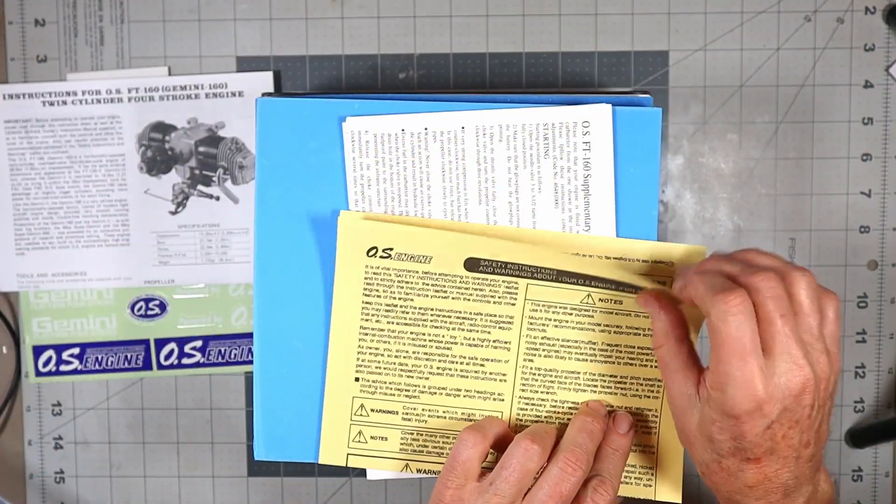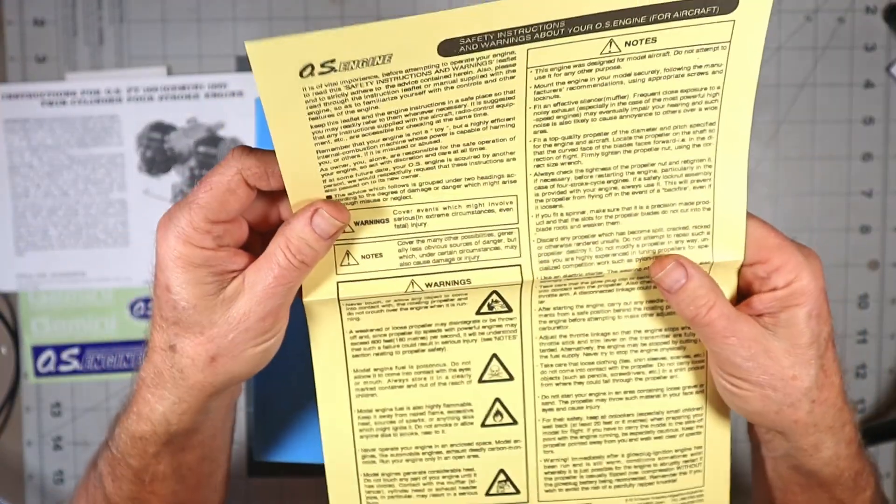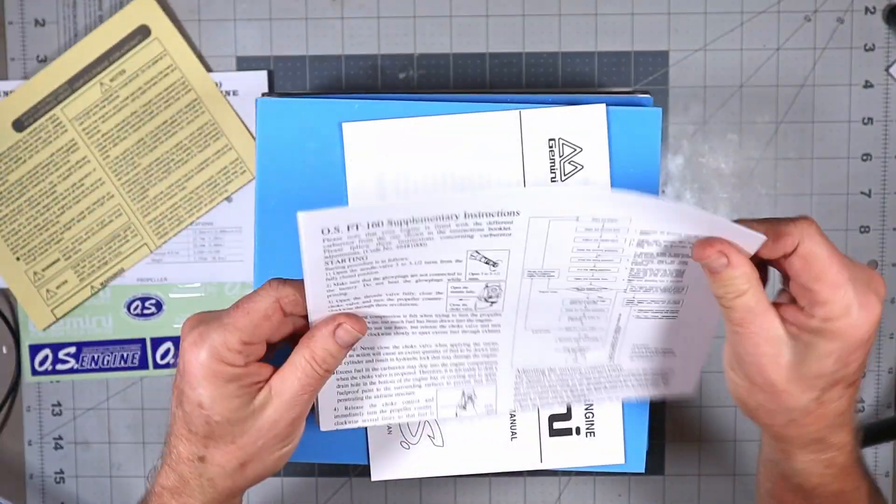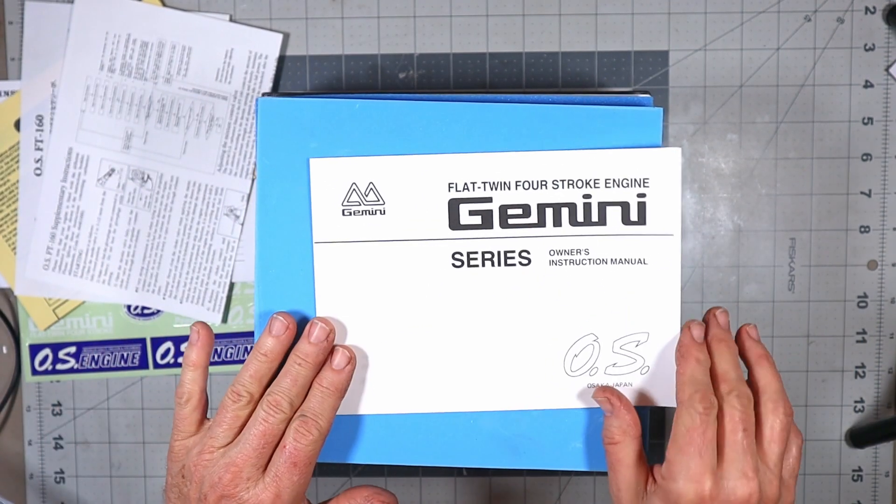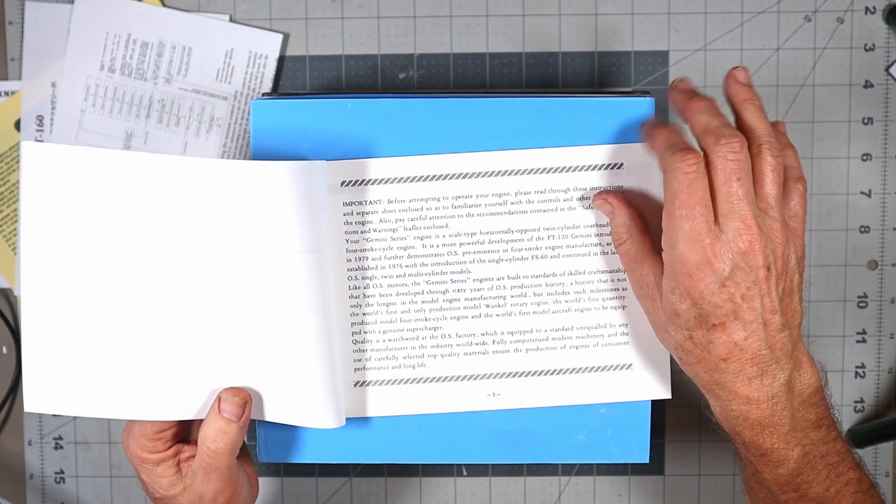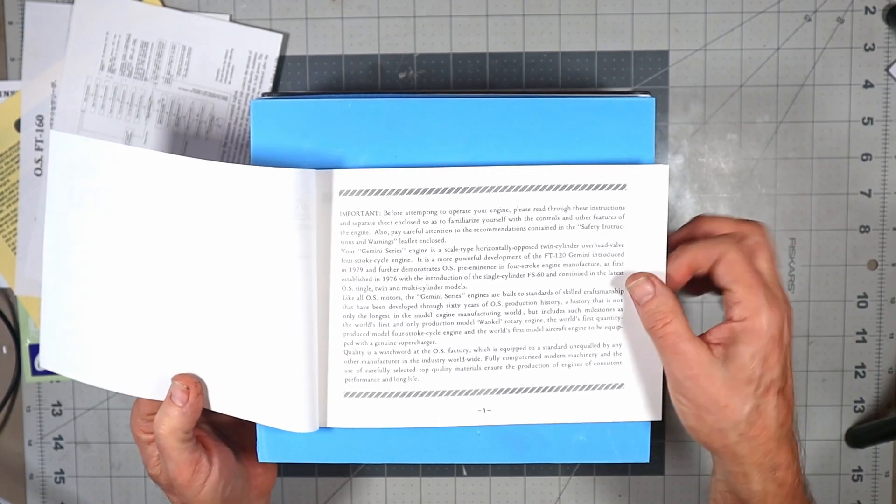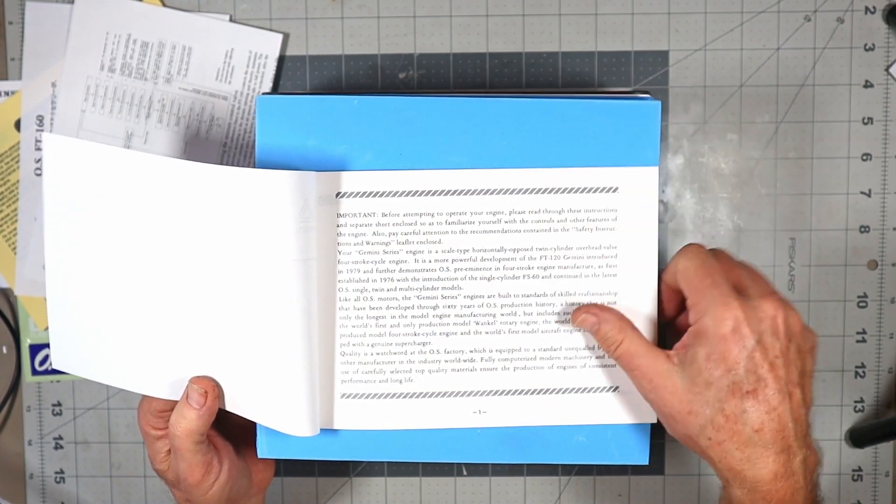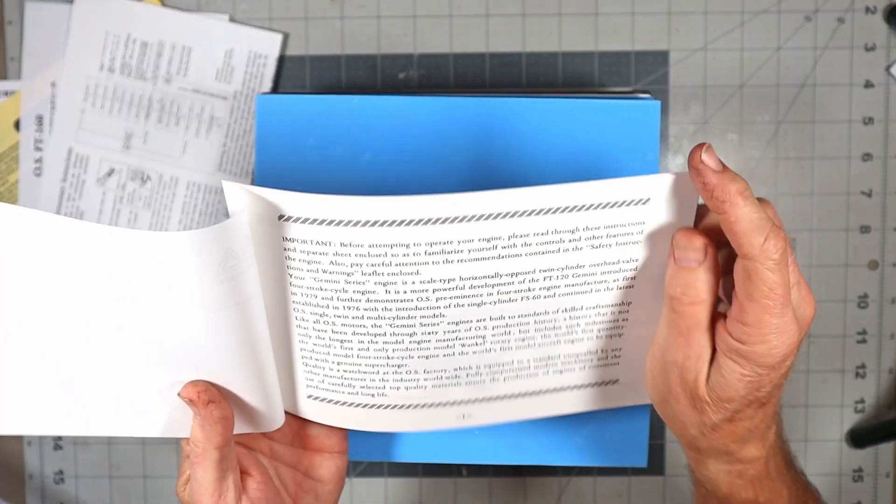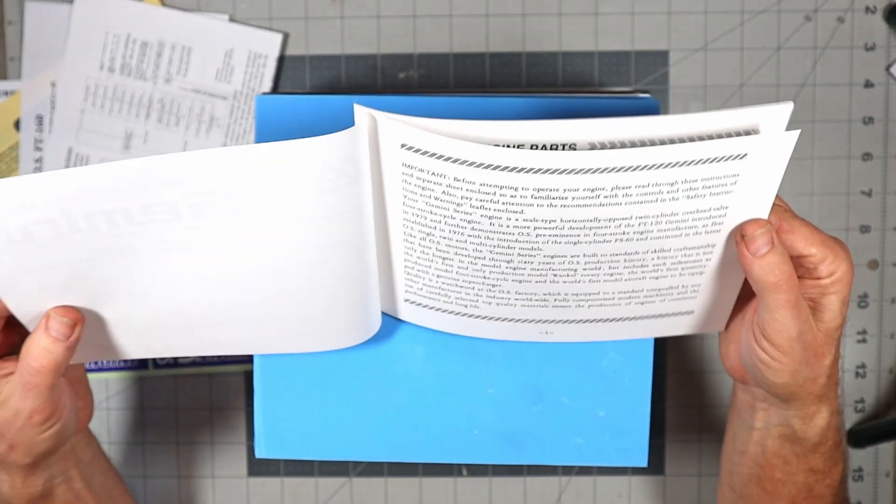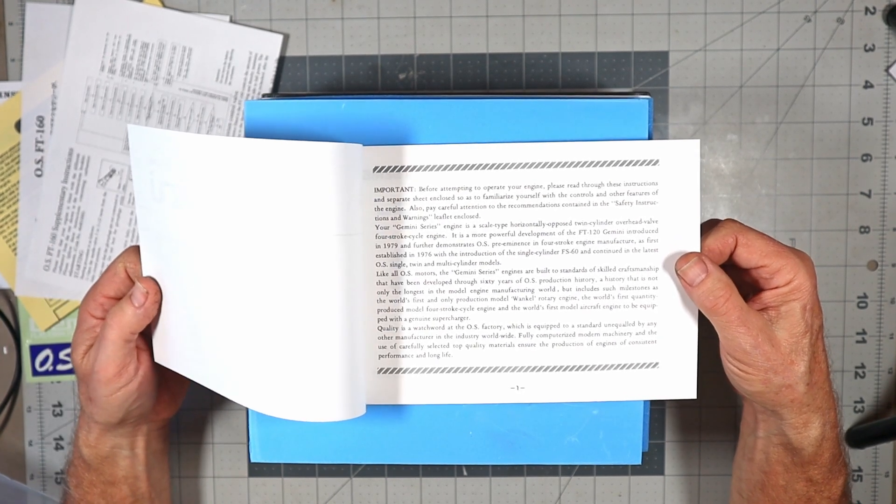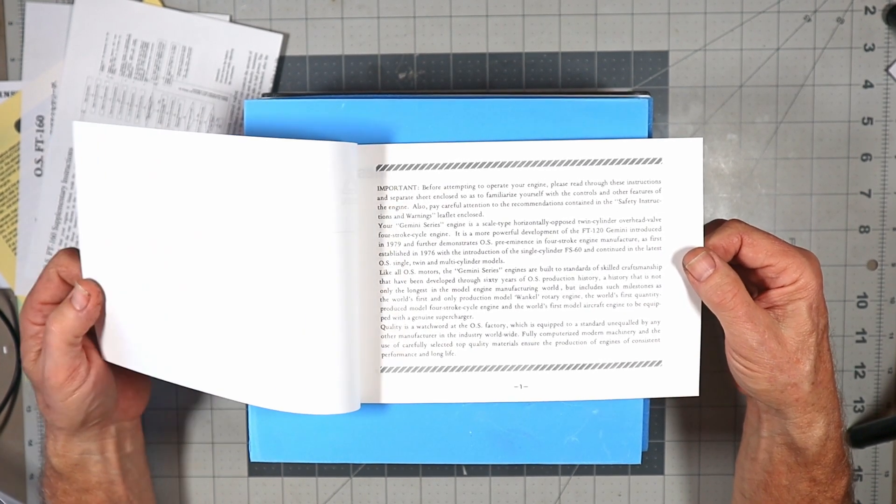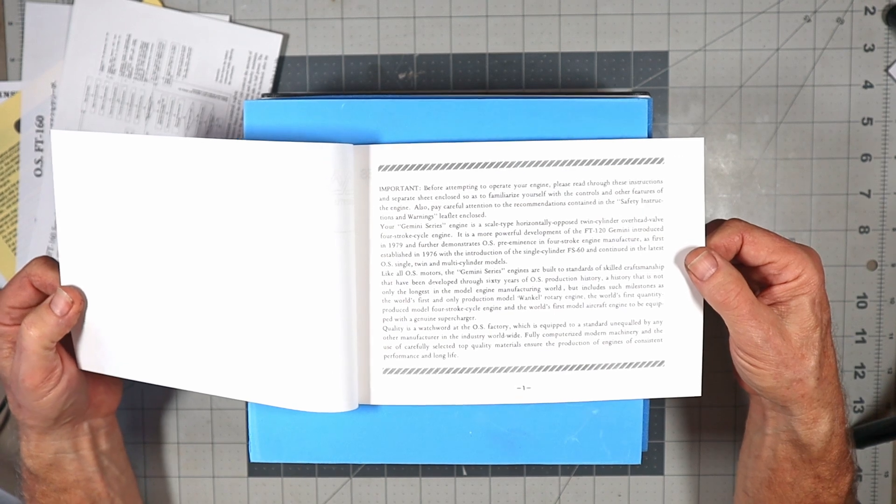There are more instructions - safety instructions and warnings in two languages, supplementary instructions, and then we've got the actual owner's manual book. This is interesting because the first page actually talks about OS engine history, which I've never really seen before. I'm really into the history of engines, and very few manufacturers publish their engine history.